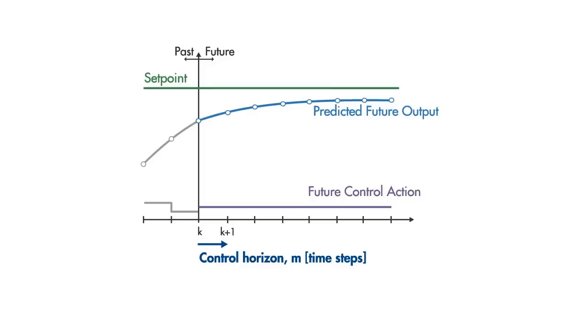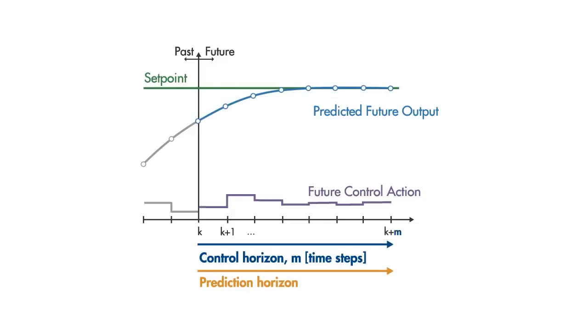And by increasing the control horizon, we can get better predictions, but at the cost of increasing the complexity. We can even choose to make the control horizon the same as the prediction horizon. However, note that usually only the first couple of control moves have a significant effect on the predicted output behavior, while the remaining moves have only a minor effect.